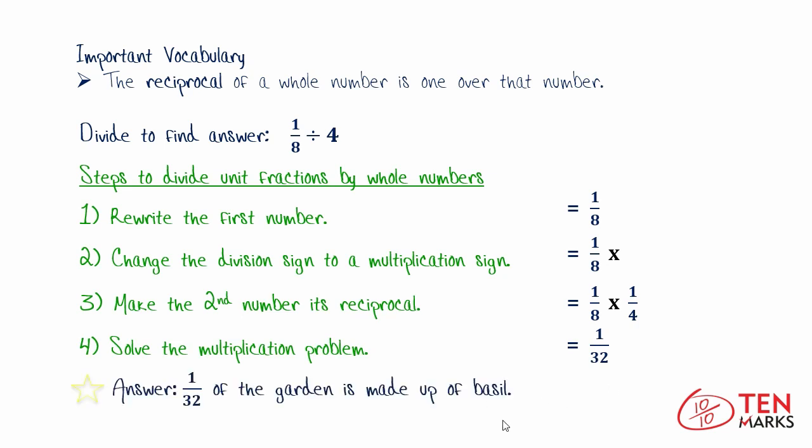And as you know, the answer to the word problem is 1/32 of the garden is made up of basil. Happy problem solving!